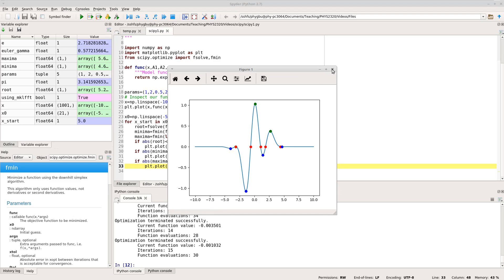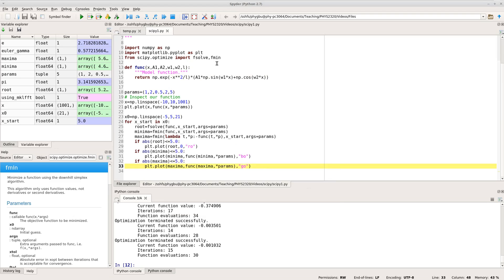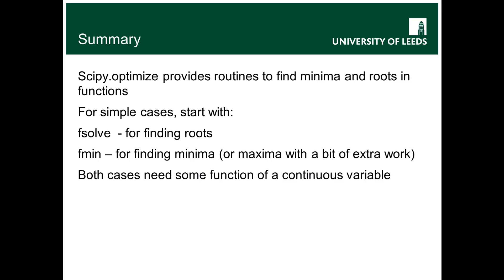So, a very simple example of using fmin and fsolve to look for minima, maxima, and roots. This is all working for a one-dimensional function. If you need to do two-dimensional functions, there are ways — you need to look at the scipy.optimize documentation. In summary, I've introduced scipy.optimize and the tools to find minima, maxima, and roots. For simple cases, fsolve and fmin are your friends, and you can find maxima with just a little extra work.